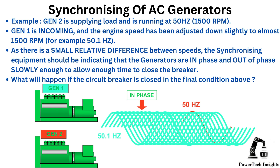Example 1: Gen 2 is supplying load and is running at 50Hz, 1500 RPM. Gen 1 is incoming, and the engine speed has been adjusted down slightly to almost 1500 RPM, for example 50.1Hz. As there is a small relative difference between speeds, the synchronizing equipment should be indicating that the generators are in phase and out of phase slowly enough to allow enough time to close the breaker.